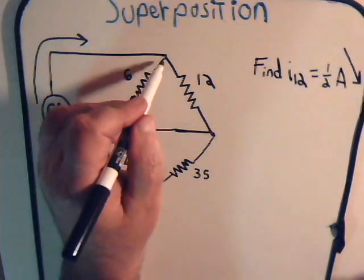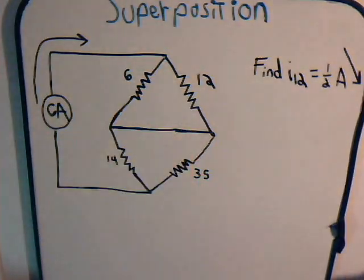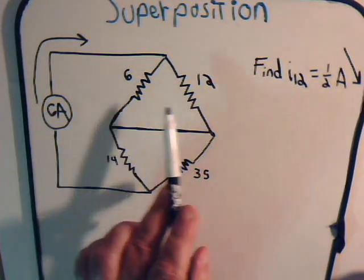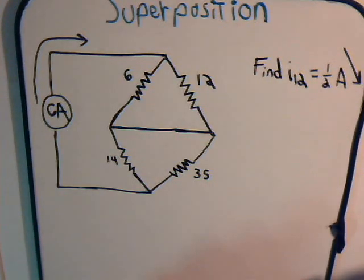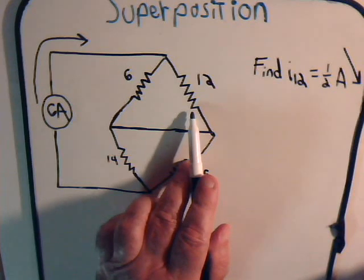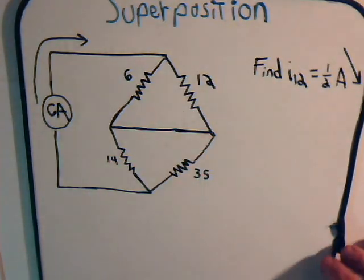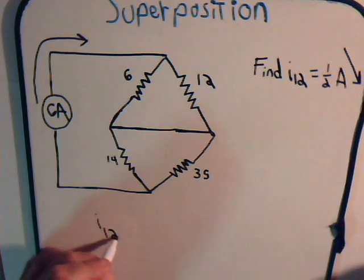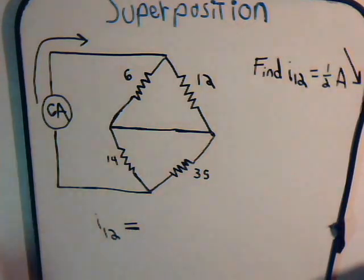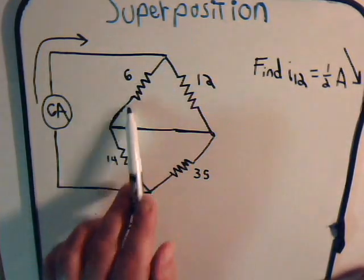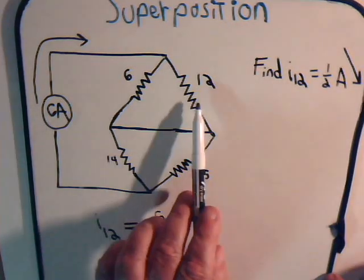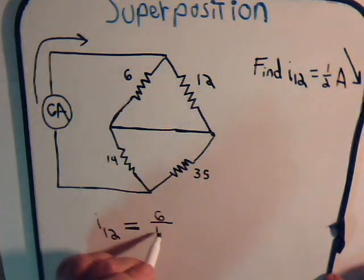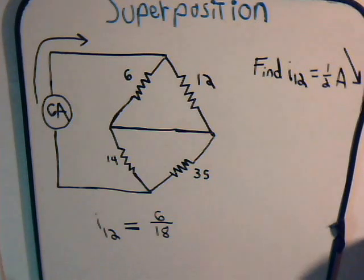So what's happening is we have 6 amps of current that's coming in to this point right here. Obviously, it's going to be split between these two resistors. So this resistor and this resistor are in parallel to one another, and now we want to find the amount of current through this resistor. So from the voltage divider principle,